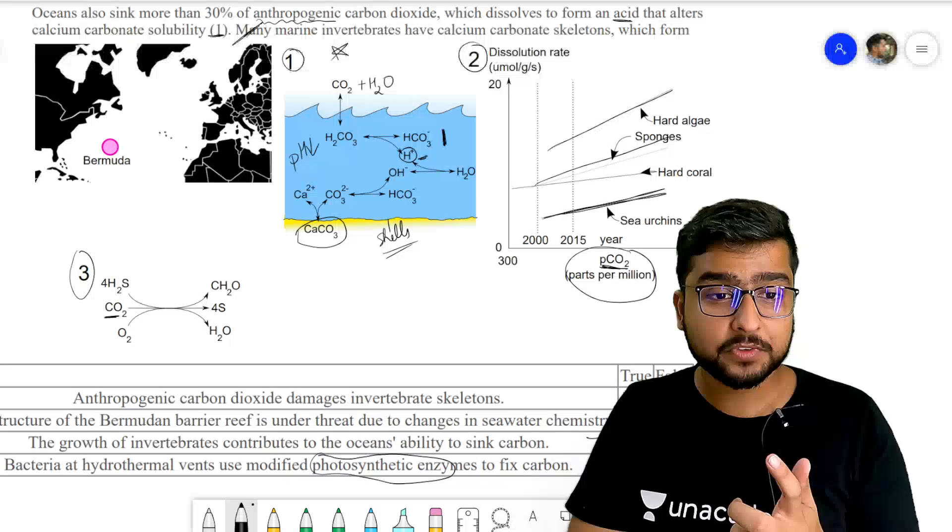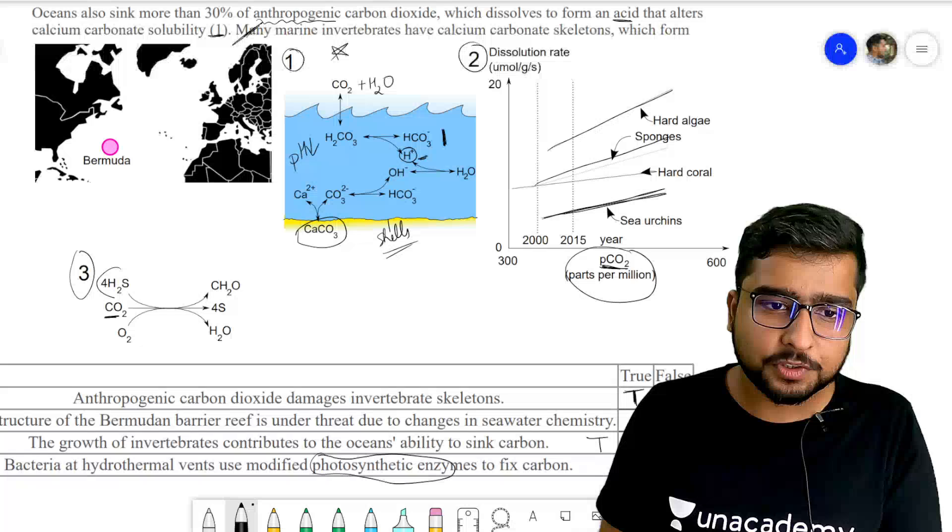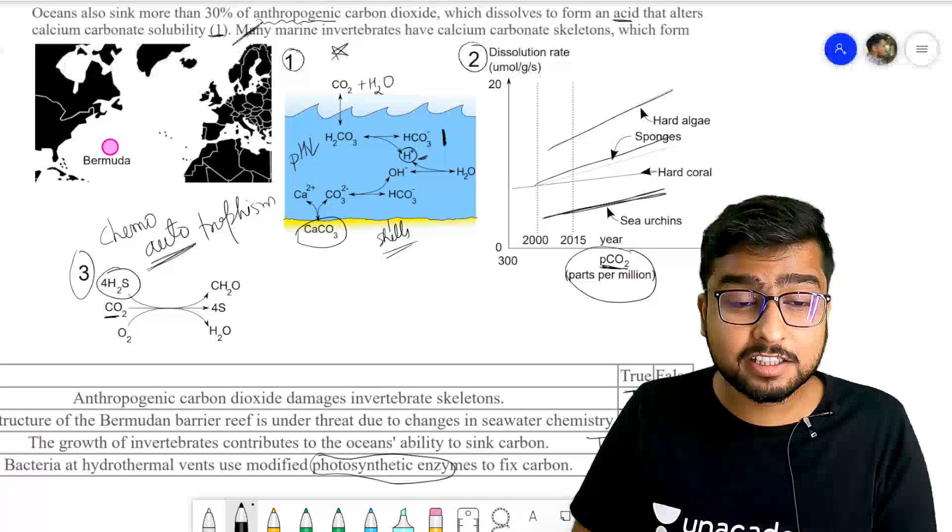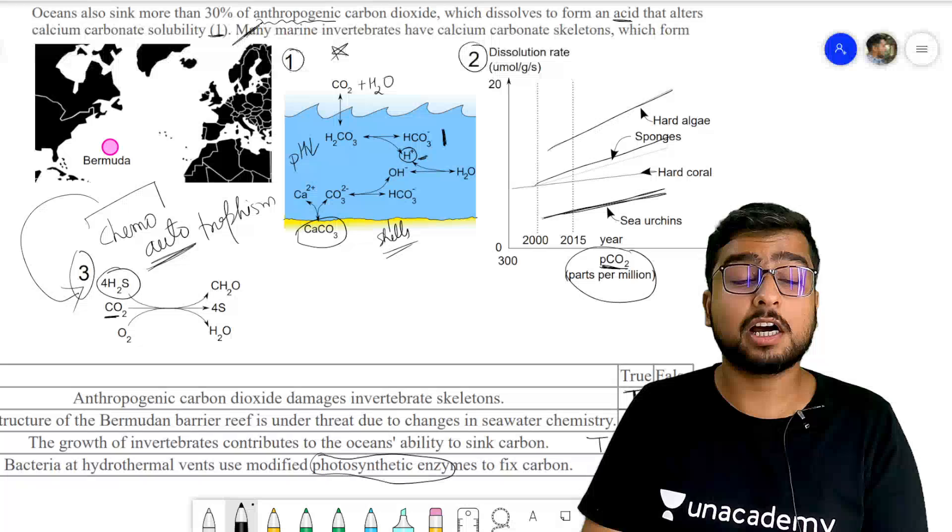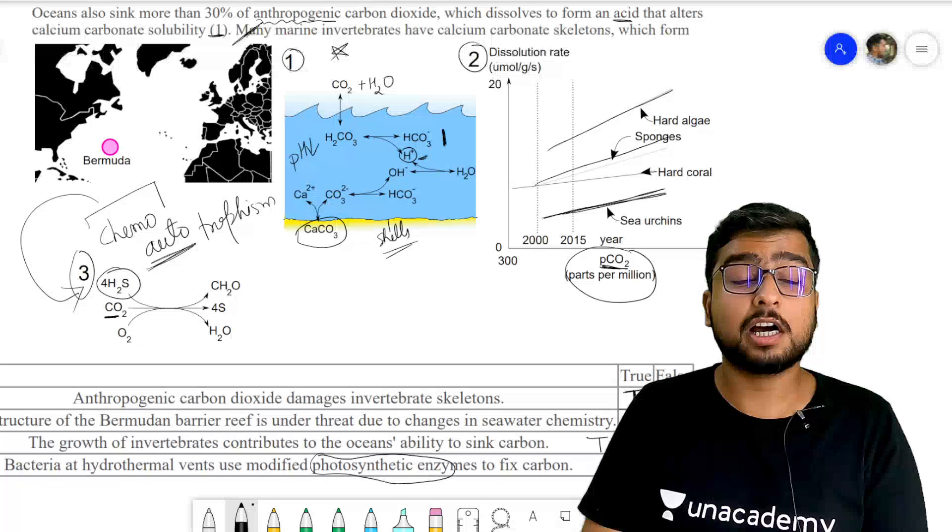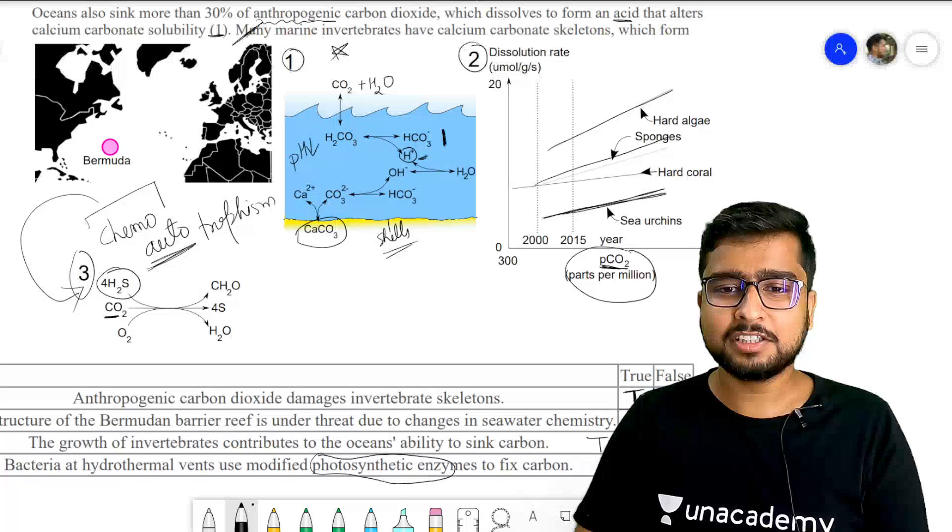Aapke kya hote? Photosynthesis mein aapke paas electron aata tha high energy ka kaha se? Kyunki photosynthesis ke dauraan, during the light reaction, the sun's energy kicked off electrons from the chlorophyll molecule itself. The energy of the light was passed into the electron. But yaha pe you don't have the light. So you don't have the electrons with that kind of energy. So you have to find high energy electrons from some other source, and in this case you have chemicals. Ishi ko hum kahte hain chemoautotrophism. Auto ka simple matlab hai you are taking the carbon from inorganic compounds like carbon dioxide or carbonate. Chemo ka matlab hai the source of energy is a chemical, which in this case is hydrogen sulfide. And this is how a sulfur bacteria does the chemoautotrophism. So once again this is a false statement because it is not photosynthetic enzymes, rather something entirely different.